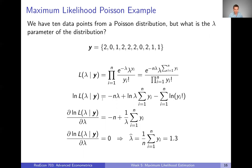We can take the log of the likelihood and get the log likelihood function instead. This is the log of the likelihood for any lambda parameter conditional on the data. Now things start to look a little easier to work with — we're adding and subtracting instead of taking products and dividing. A necessary condition to find the maximum likelihood estimator is that the derivative of the log likelihood function with respect to each parameter equals zero. In this case we only have one parameter, so we only have one derivative to take.